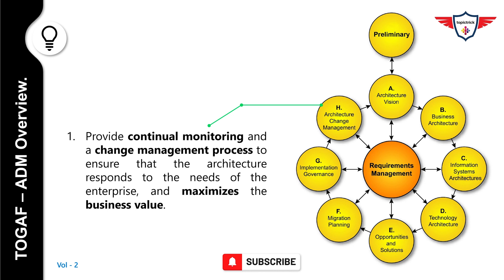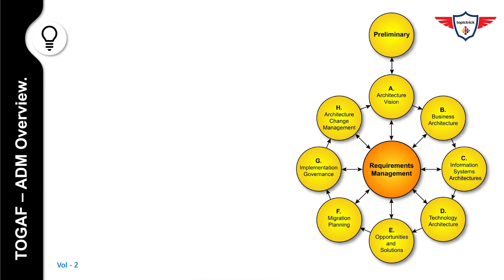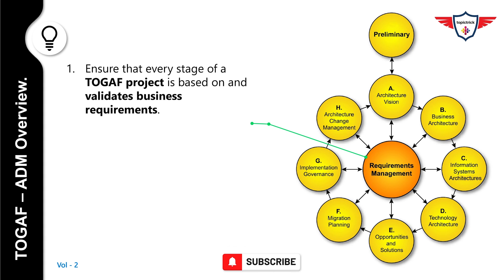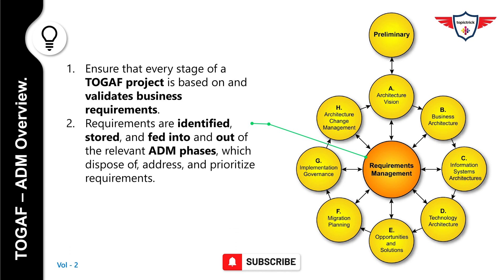Now let's talk about the last phase — Requirements Management. This phase interacts with each phase of the ADM cycle that we discussed so far. The Requirements Management phase ensures that every stage of a TOGAF project is based on and validates business requirements. Requirements are identified, stored, and fed into and out of the relevant ADM phases, which dispose of, address, and prioritize requirements.